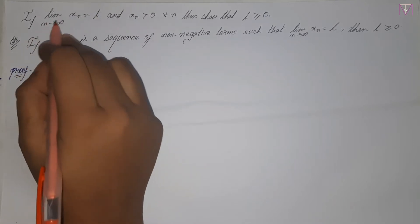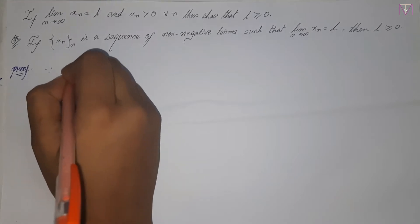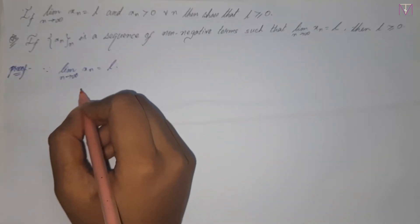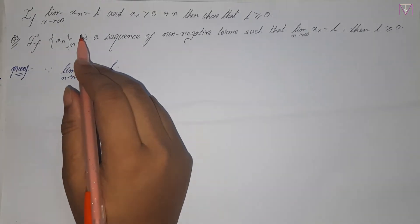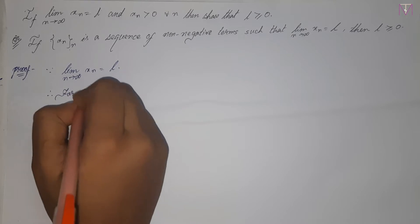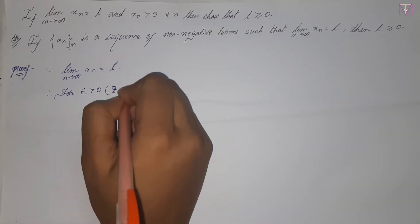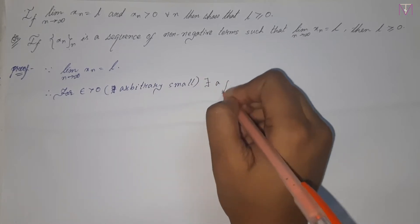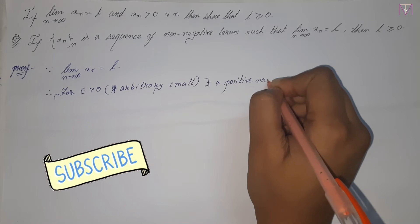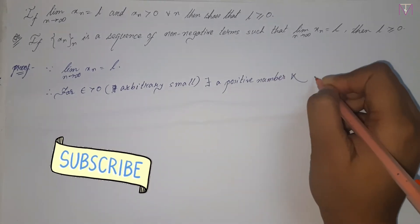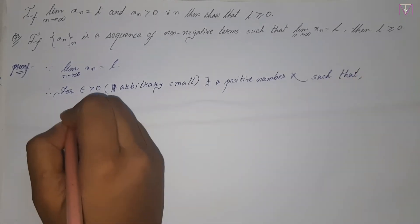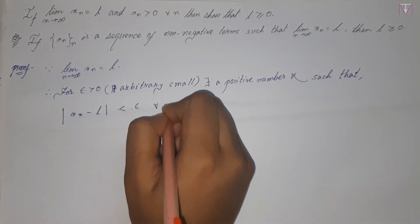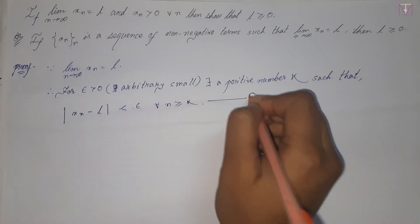We are given that the limit as n tends to infinity of xn equals l. By definition, for epsilon greater than 0, there exists a positive number k such that the modulus of xn minus l is less than epsilon for all n greater than or equal to k. This is equation number 1.